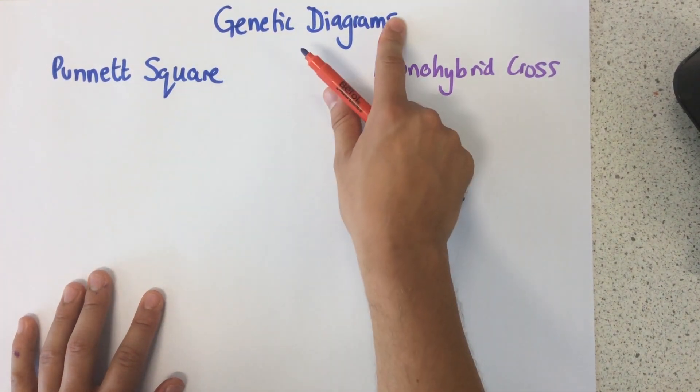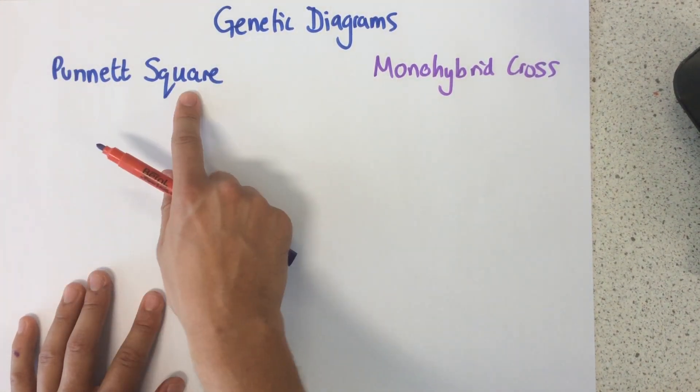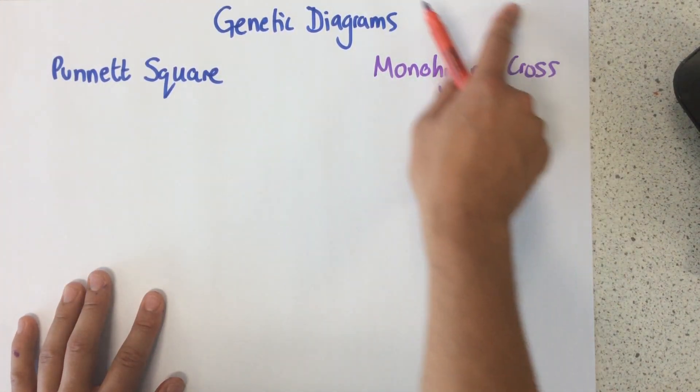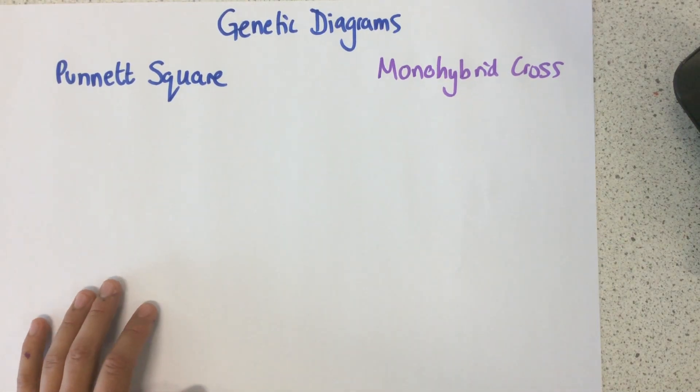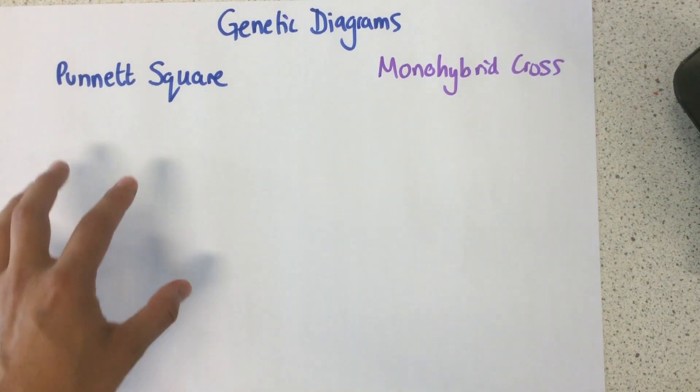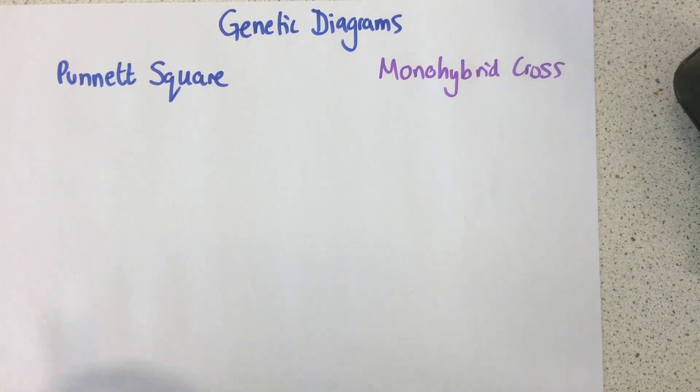Today I'm going to talk to you about genetic diagrams. I'm going to show you how to do a Punnett square, how to do a monohybrid cross, and we're going to see how sex is determined by using a Punnett square.